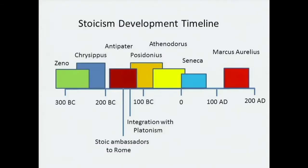Let's get into Stoic logic and physics, but before we get into the ideas, just a brief timeline about the scale of Stoicism and the developments that happen within Stoicism. It starts before 300 BC with the founding of the school by Zeno of Citium.